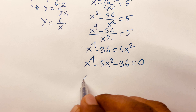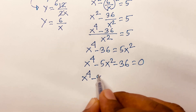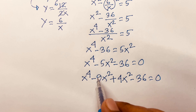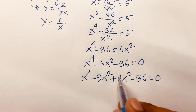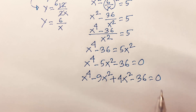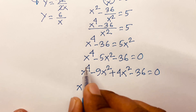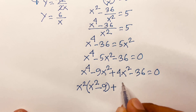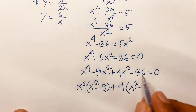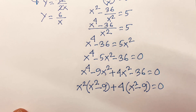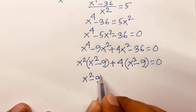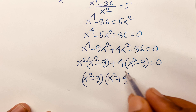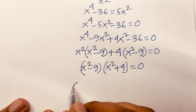Now I do factorization using the middle term method. The equation becomes x to the power 4 minus 9x squared plus 4x squared minus 36 equals 0. Note that 9 times 4 equals 36, and minus 9 plus 4 gives minus 5. So x squared is common: x squared(x squared minus 9) plus 4(x squared minus 9) equals 0.